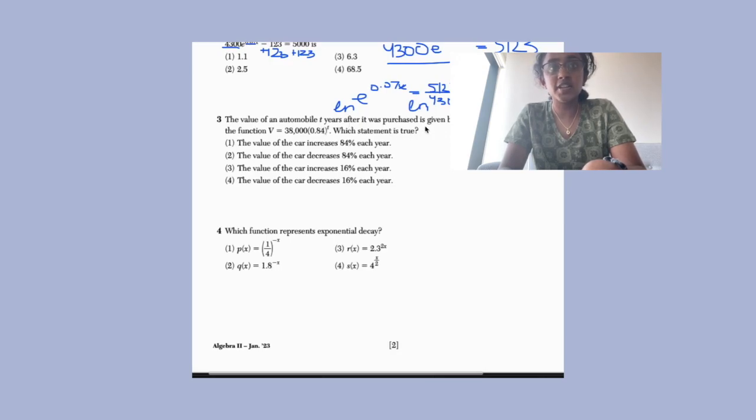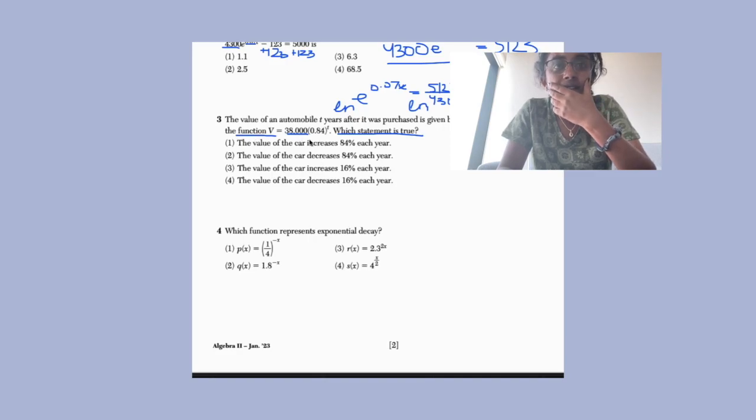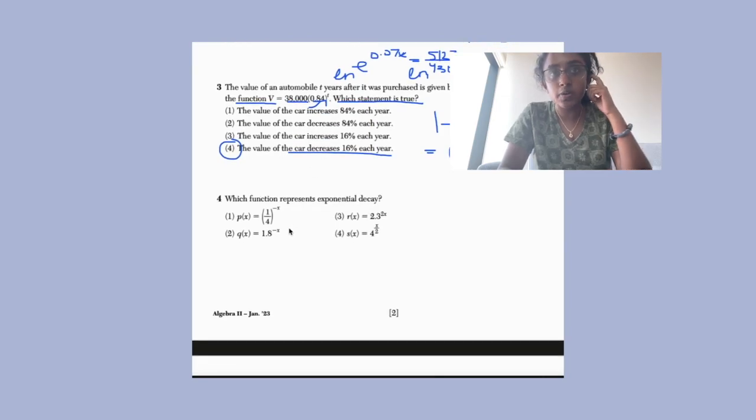The value of an automobile t years after it was purchased is given by the function V = 38,000 times 0.84^t. Which statement is true? So when we have an exponential function, we have two different types that it could be. Growth or decay. When it's decay, it's less than one. Yay. I don't know. I guess that's a song I used for that. If it's less than one, it's exponential decay. So if it's decay, it means that it decreases by 1 minus whatever's inside. Because this is decay, it's less than one. We would get 0.16. The value of the card decreases 16% each year because it stays at 84% of what it was before. And if it stays at 84%, then it means that it decreases by 16.